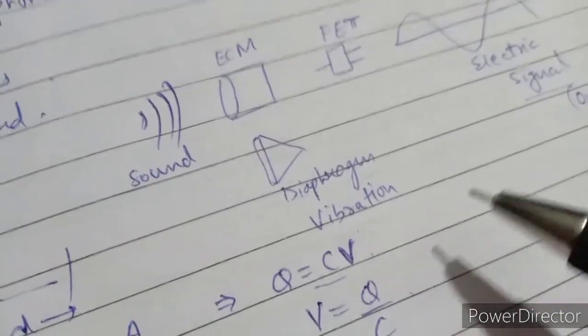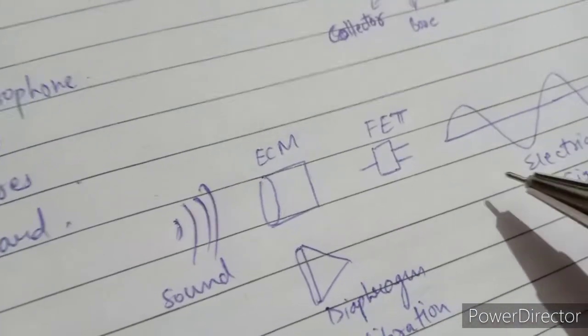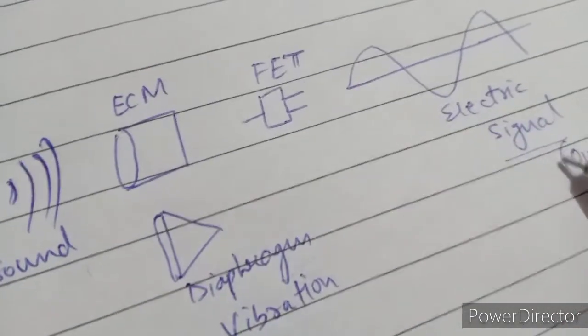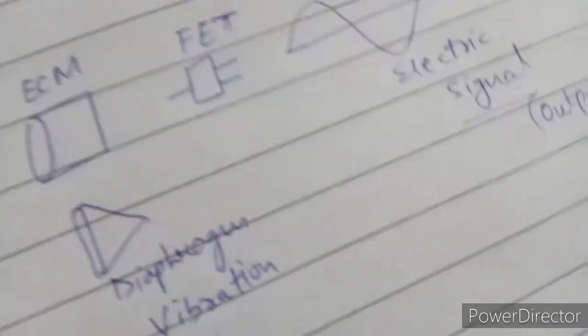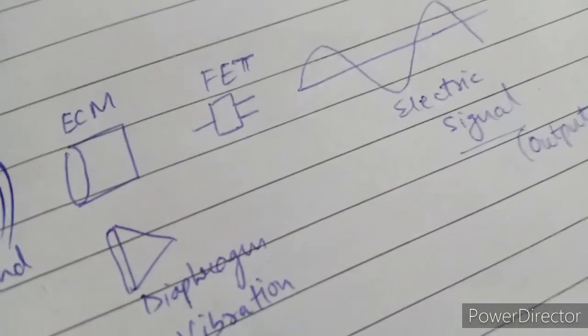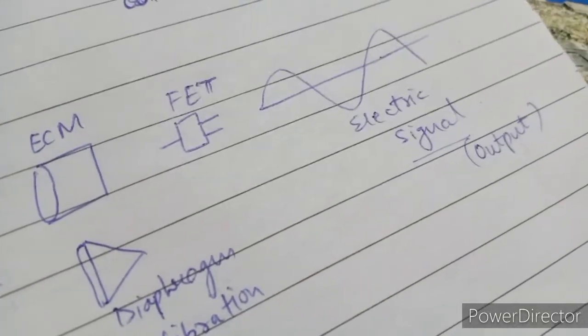When these vibrations travel through the FET, it amplifies the signal and converts it into an electrical signal. This signal appears as output for us, and due to this the light blinks and then switches off.